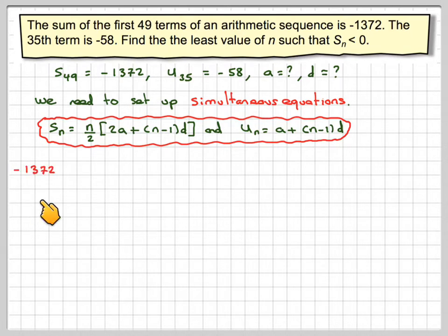So using minus 1372, we're using the sum formula first. This is equal to 49 over 2, because this is the sum of the first 49 terms, 2 times A plus 49 minus 1 times D.